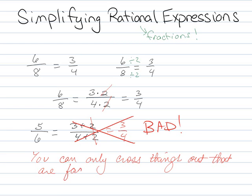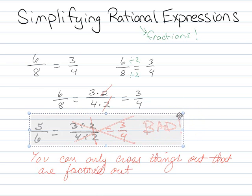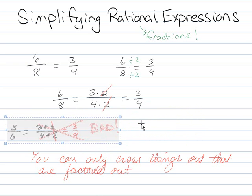You can only cross things out that are factored out. So just like you would never do this, because that just wouldn't even make any sense to you numerically, make sure you understand why. Let me see if I can make this a little bit smaller if I wanted to fit this all on the same page.